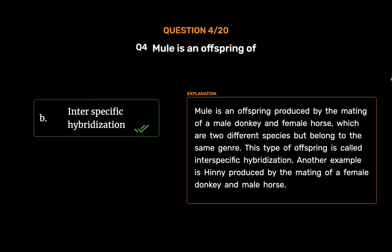The correct answer is Option B: Interspecific hybridization. Mule is an offspring produced by the mating of a male donkey and female horse, which are two different species but belong to the same genus. This type of offspring is called interspecific hybridization. Another example is hinny, produced by the mating of a female donkey and male horse.